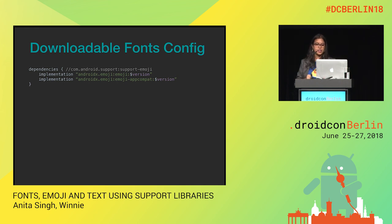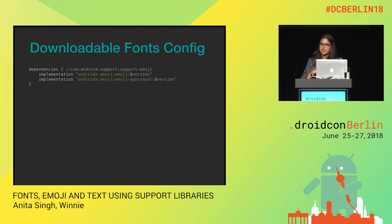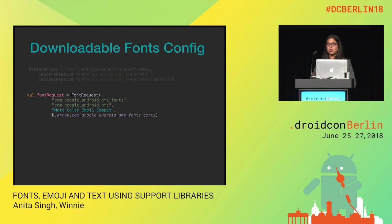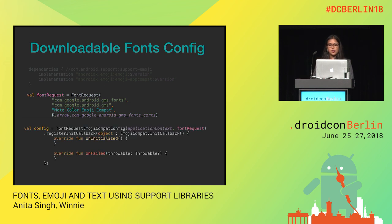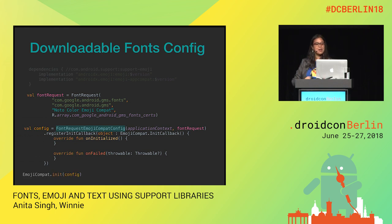How do we get started with EmojiCompat? One way is to do it using downloadable fonts. The first dependency is for regular TextViews and the second is for AppCompat TextViews and EditTexts. You have your FontRequest — the same as with downloadable fonts — except you use the NotoColorEmoji font, which allows you to have the latest emojis in Android. Then you have the FontRequestEmojiCompatConfig with the onInitialized and onFailed callbacks, and you call EmojiCompat.init with the config. You want this to happen as soon as possible in your app lifecycle, so put this in Application.onCreate.